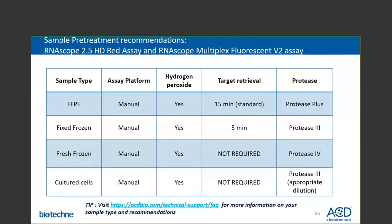This slide shows sample pretreatment recommendations for various sample types for RNAscope chromogenic and fluorescent V2 assay on manual platforms. All sample types require hydrogen peroxide treatment, but target retrieval time and protease treatment vary. For FFPE, we recommend 15 minutes target retrieval and use of Protease Plus for digestion. For fixed frozen, 5 minutes of target retrieval is recommended with Protease III. For fresh frozen samples, target retrieval is not required and the strongest Protease IV is used. For cultured cells, no target retrieval is needed and a dilution of Protease III is recommended. Note these are all for the manual assay platform.